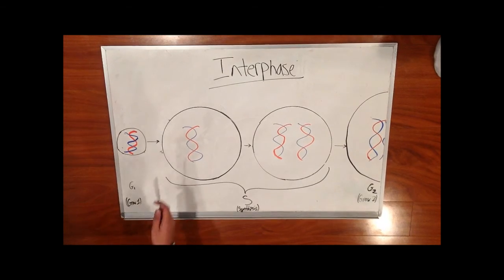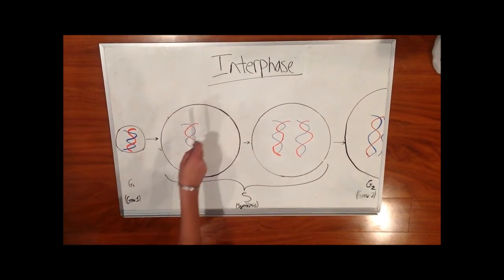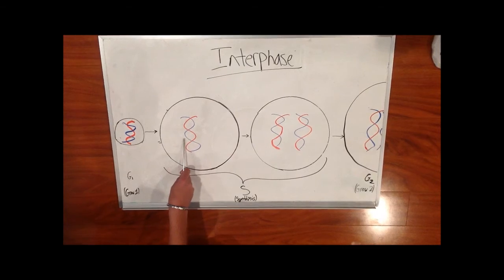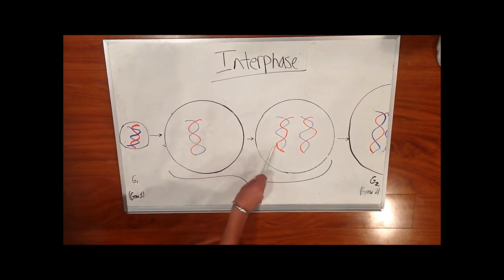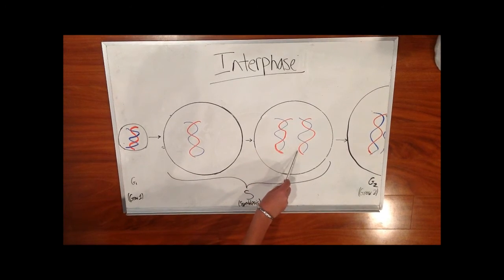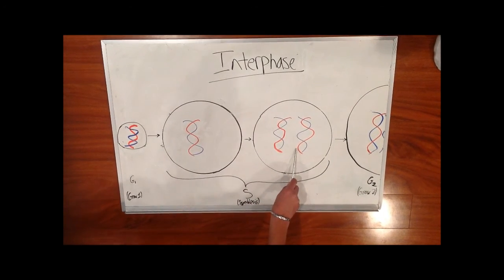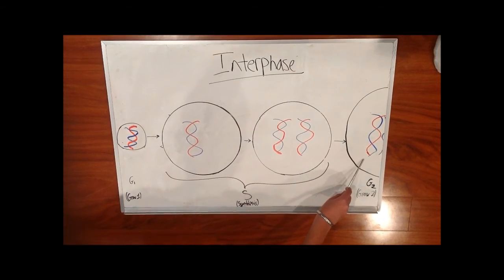First, the cell will go through interphase. The cell will grow to a specific size. Since the cell is splitting itself, it shouldn't be too small. Next, the cell will duplicate its DNA so that each daughter cell will have DNA. Then it will start to grow again. That is the end of interphase.